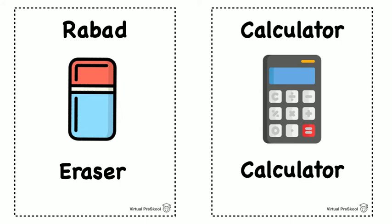Rabad is an eraser. Listen to the way that I'm pronouncing that word — I'm not saying 'rabad,' I'm saying rabad. At that last A, I'm actually kind of rolling that A with a little bit of an R in there. Rabad is an eraser.